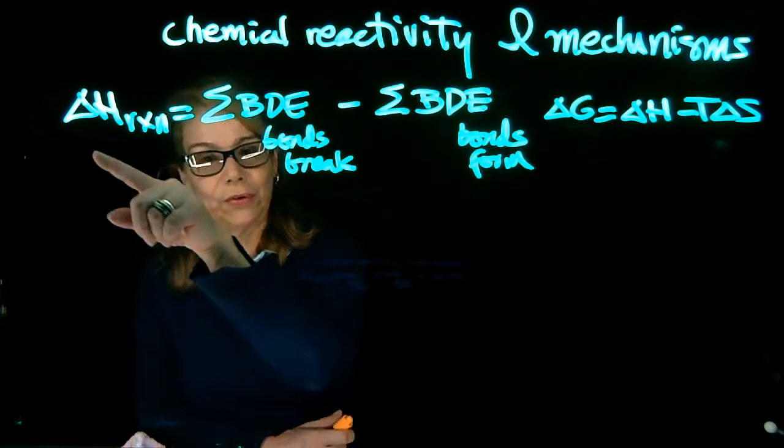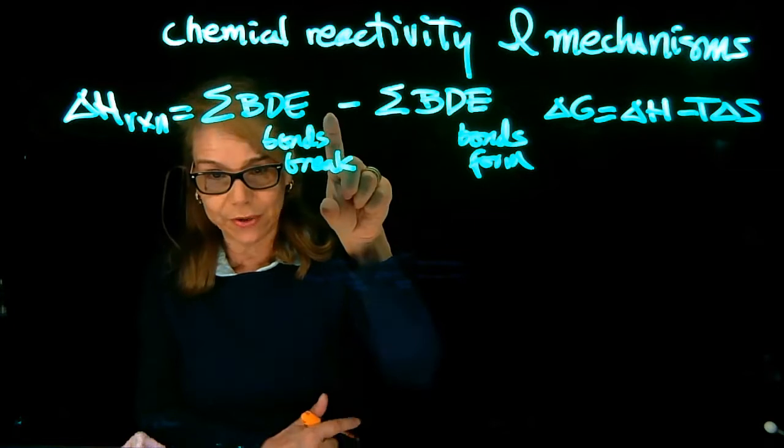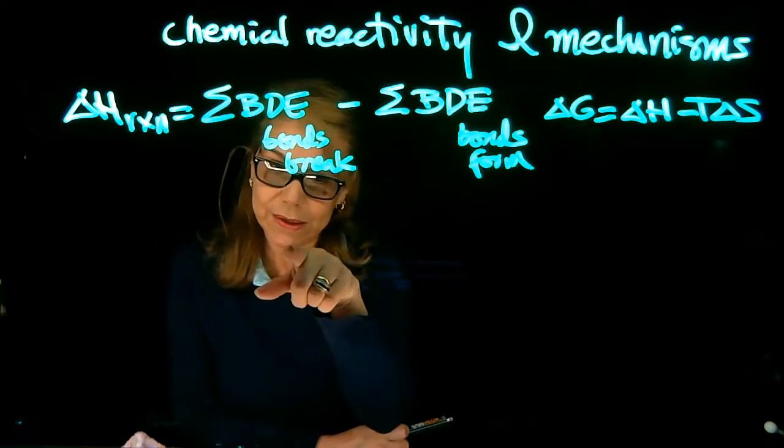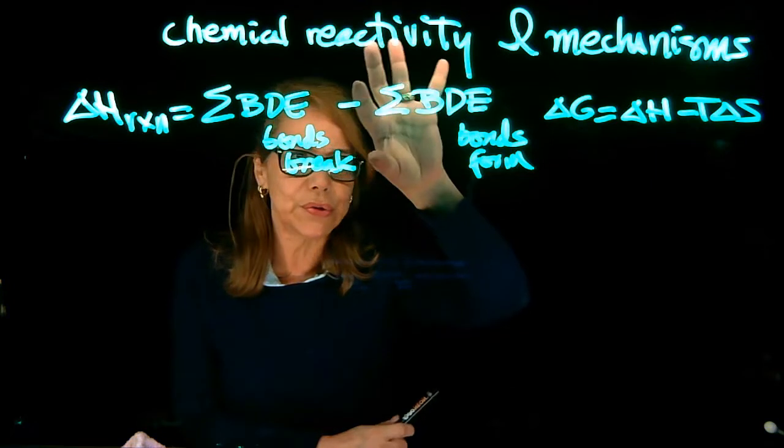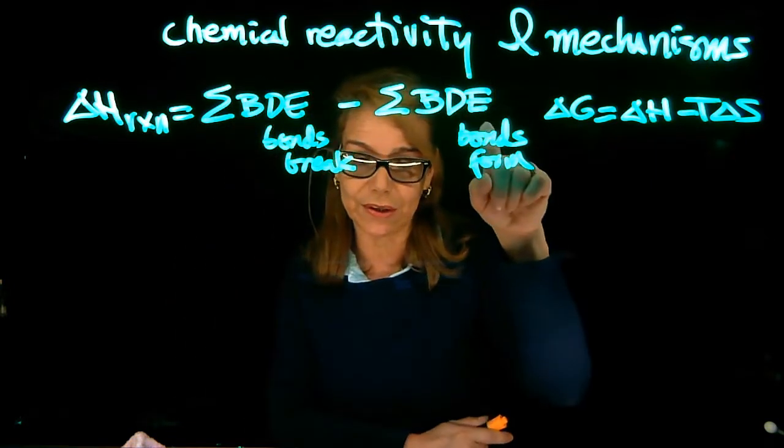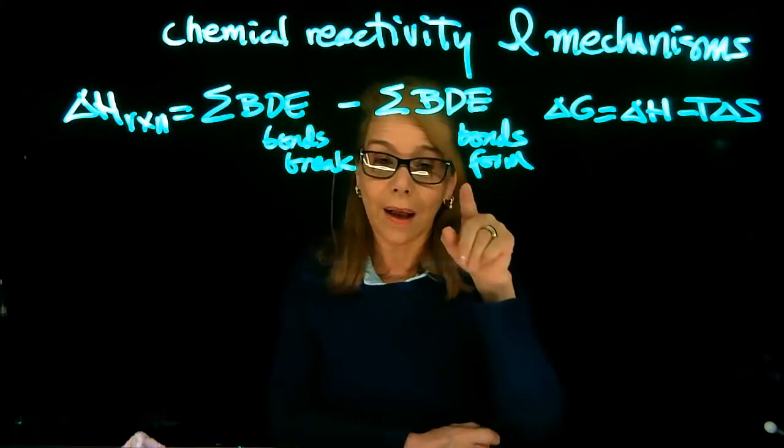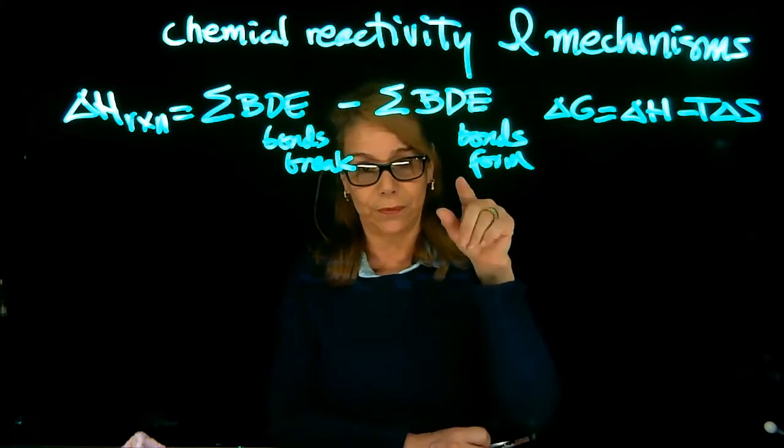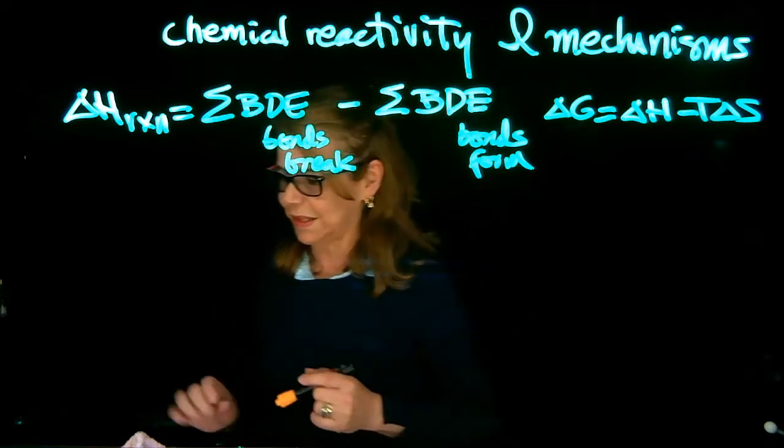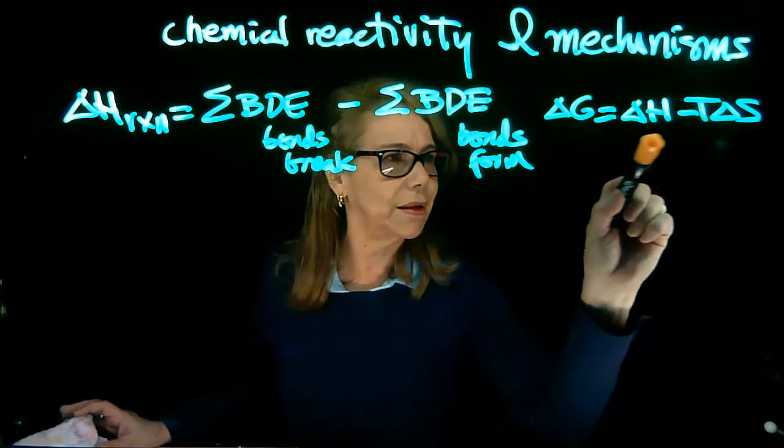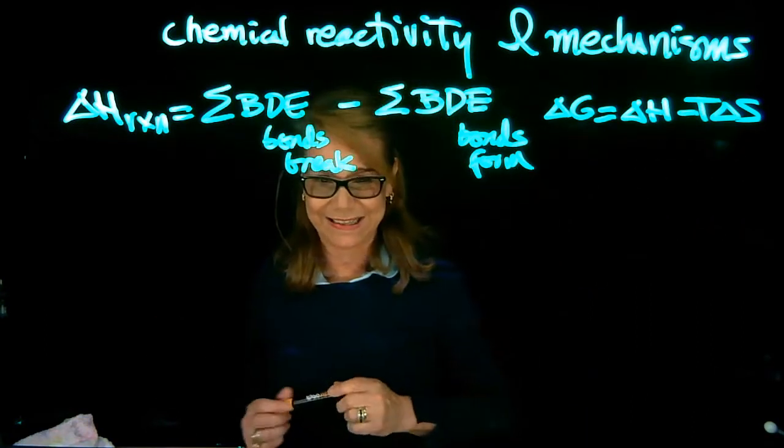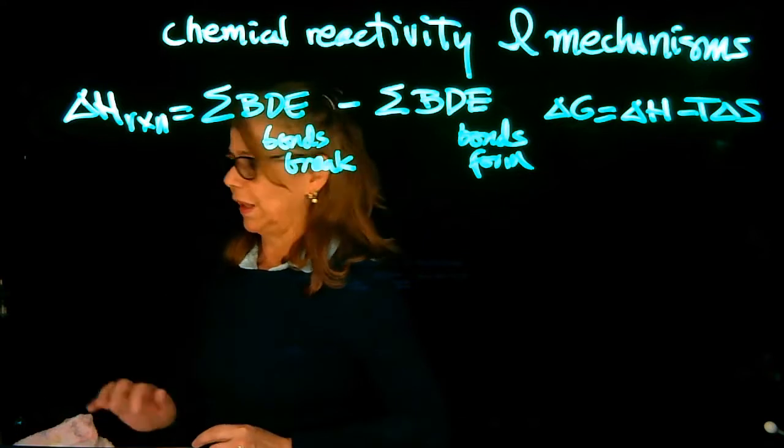Let's remember that to do the calculation, we need to break bonds, so we add the bond dissociation energy of the bonds we break, and then we subtract the bond dissociation energy of the bonds that form, because when bonds form, energy is released. We need to calculate delta H in order to understand the impact in this equation of Gibbs free energy.